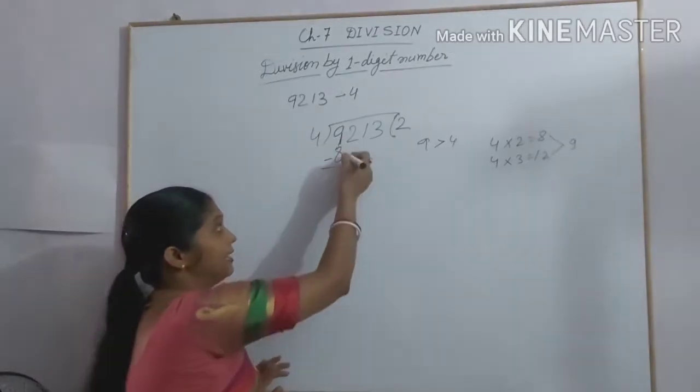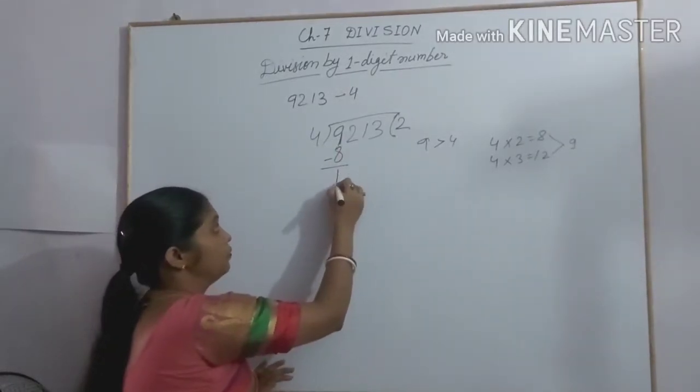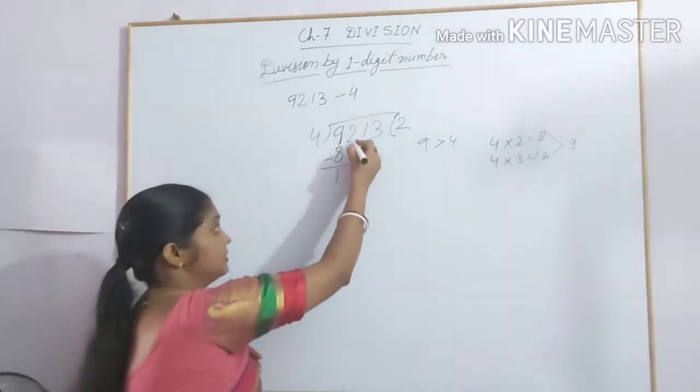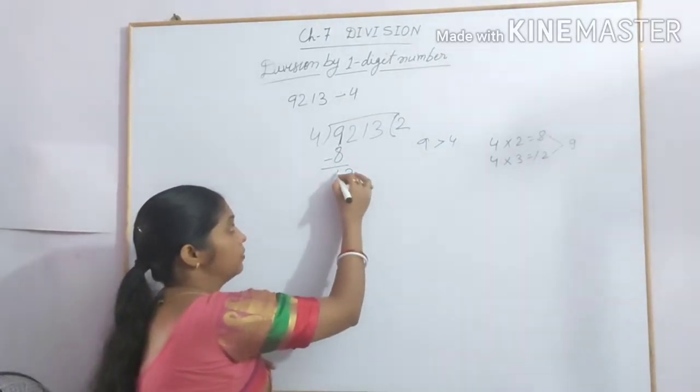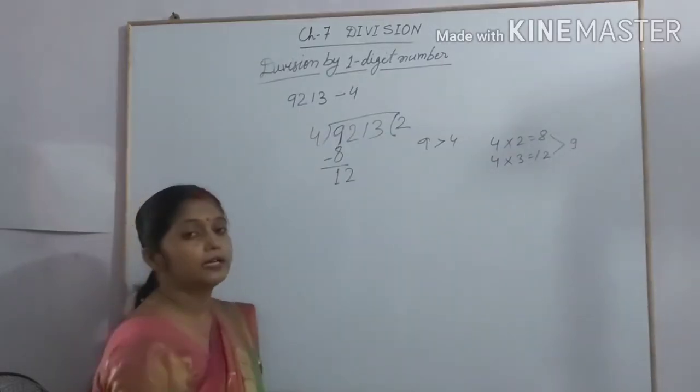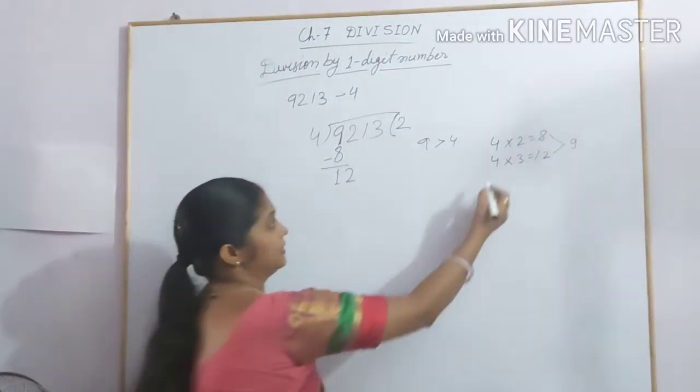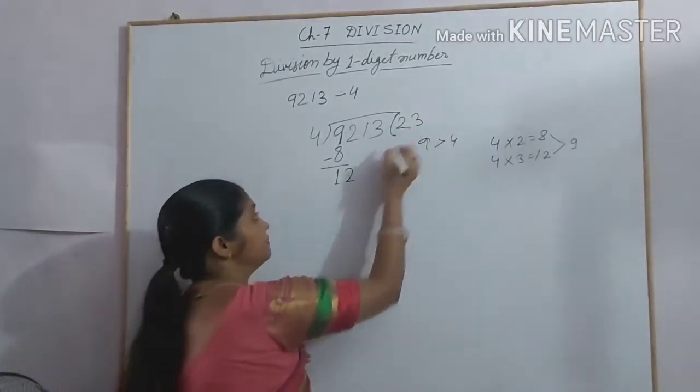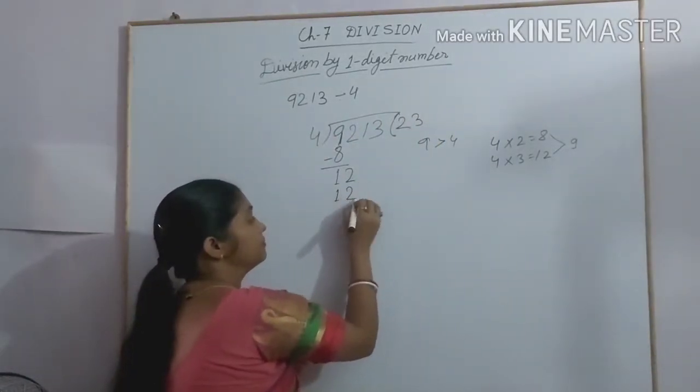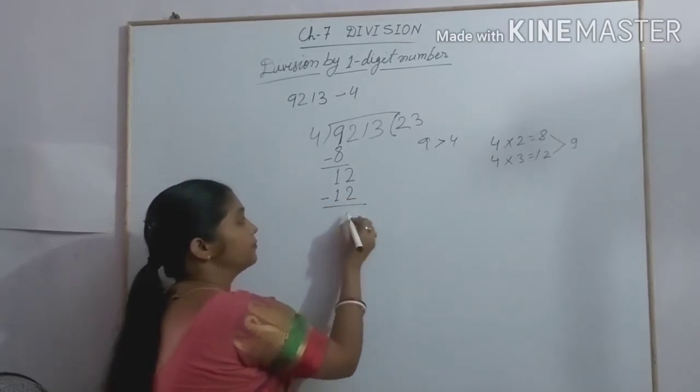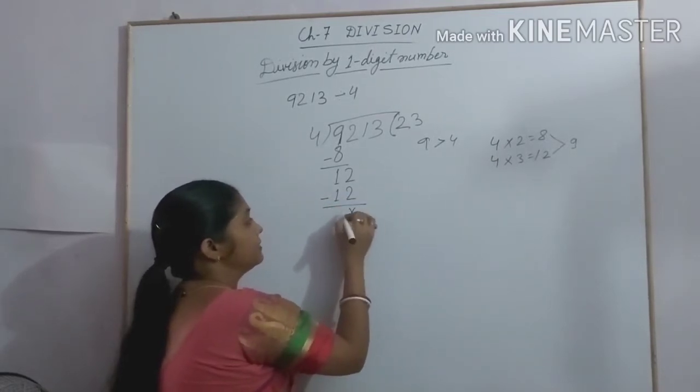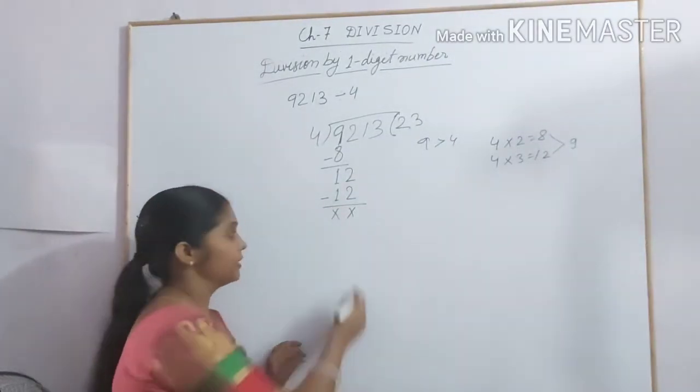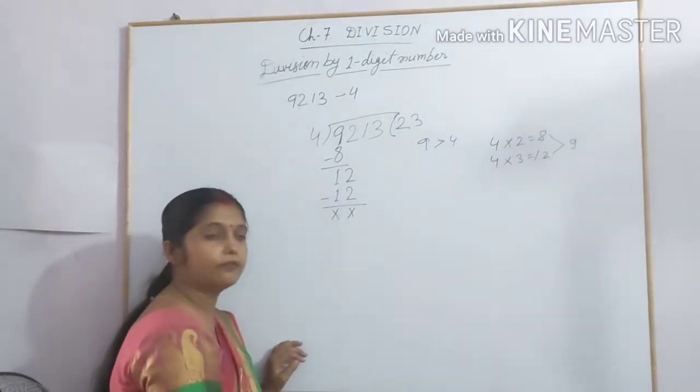Now subtract 9 minus 8 equals 1. The second step is bring down the next digit. The next digit is 2, so we have 12. In the table of 4 we see 4 times 3 gives you 12. So we can write 4 times 3 gives you 12. Subtract these two. When we subtract, 2 minus 2 equals 0, 1 minus 1 equals 0. We can write here 0 or put the sign of cross.